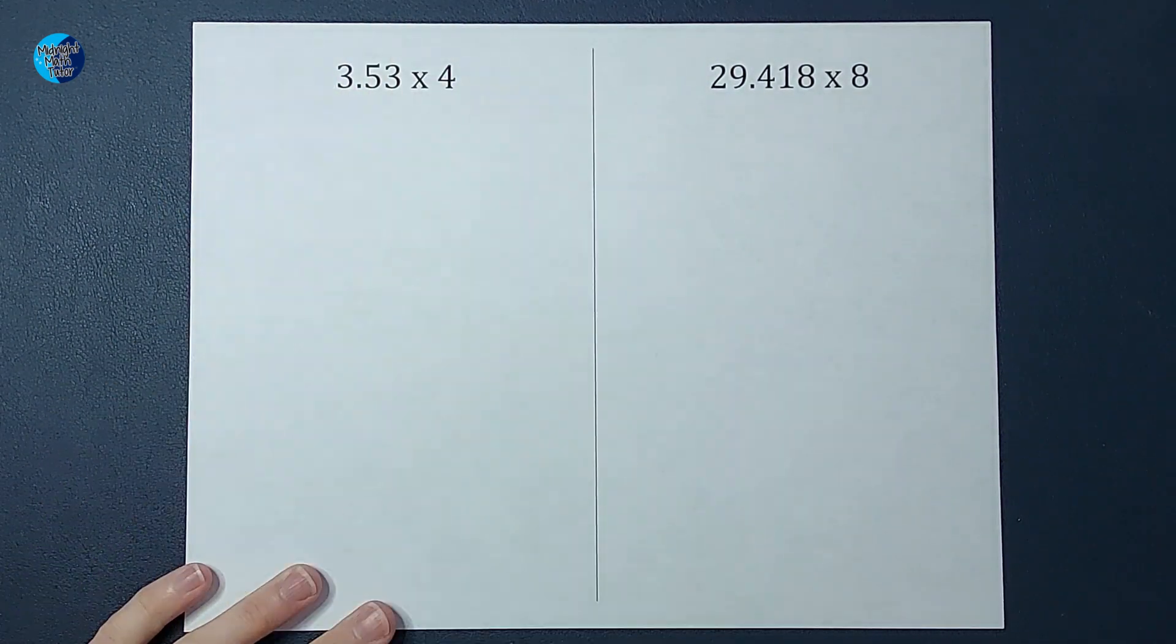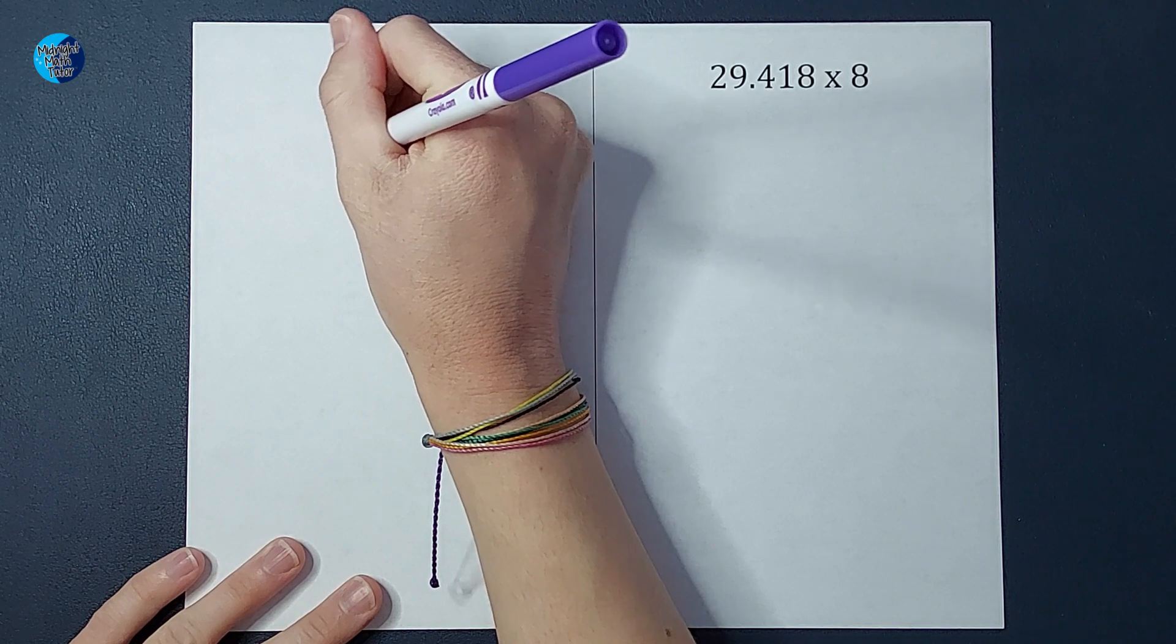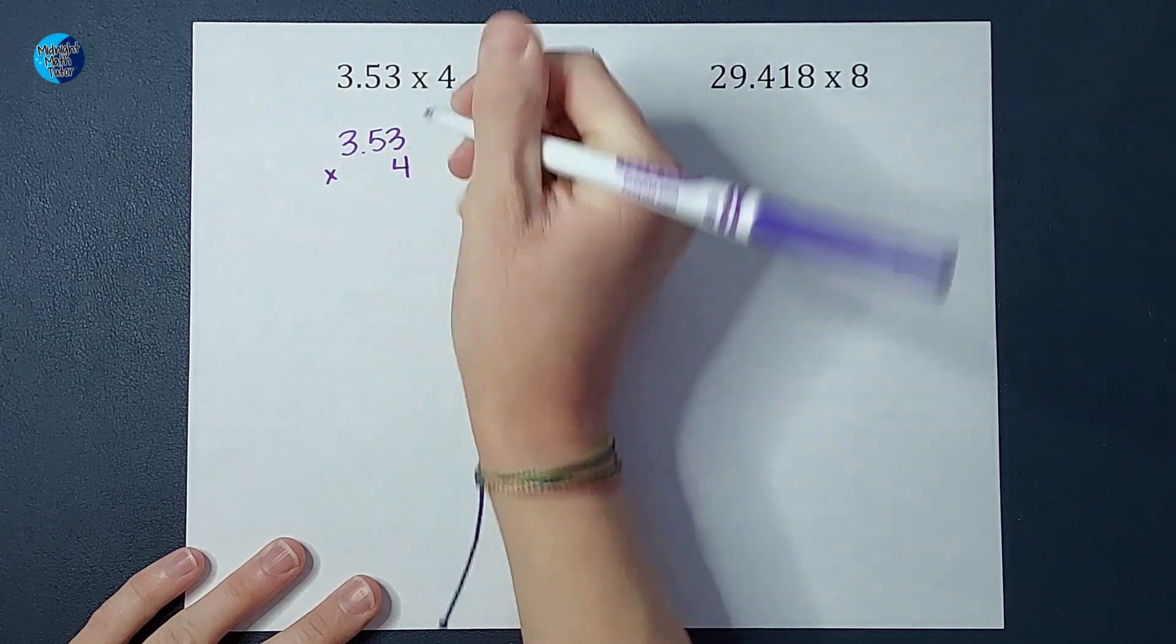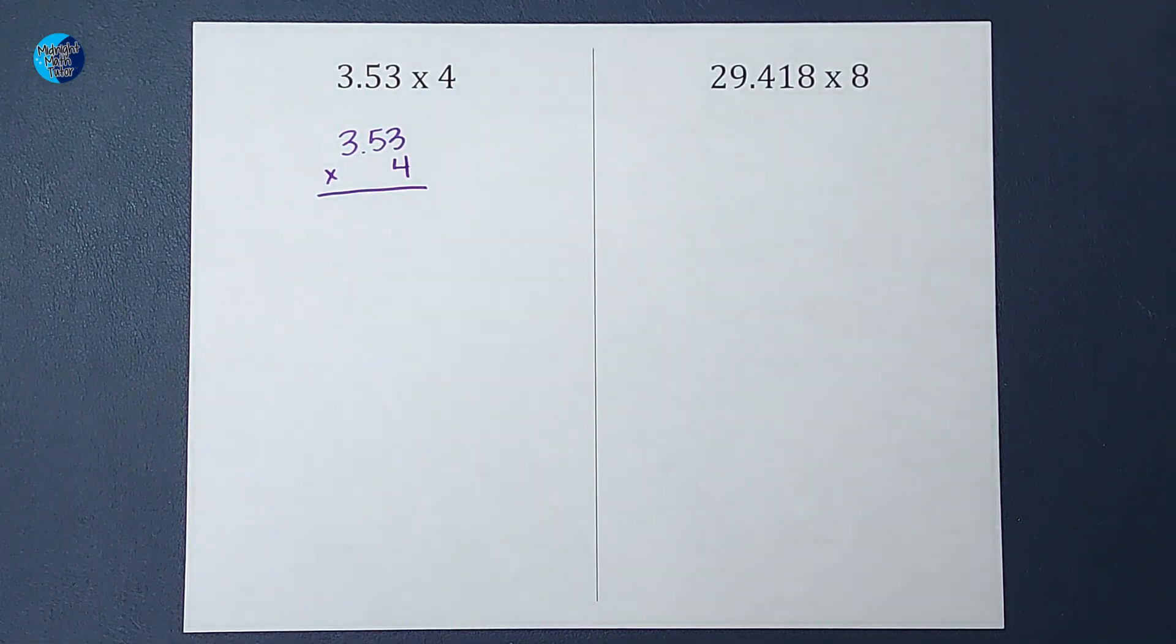So for a second I'm still going to write the decimal, but I can kind of pretend like it's not there for a minute. So I'm going to have 3.53 times 4. Okay, it's just going to look like that. My decimals do not have to be lined up. Then I'm going to go ahead and multiply.